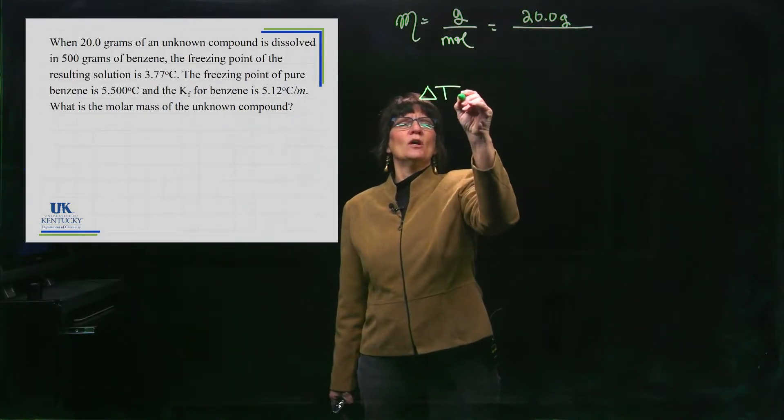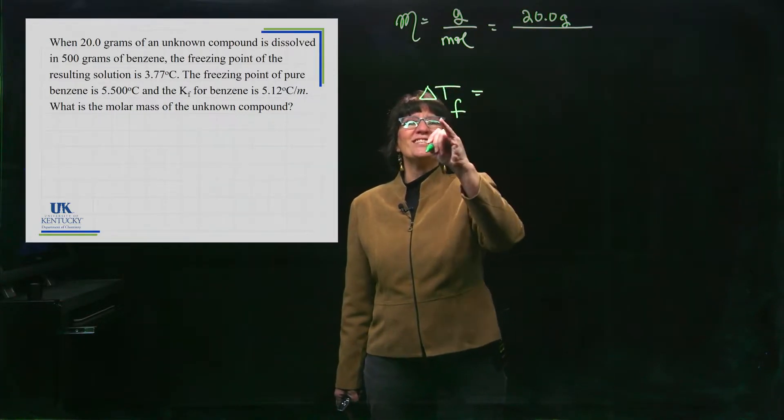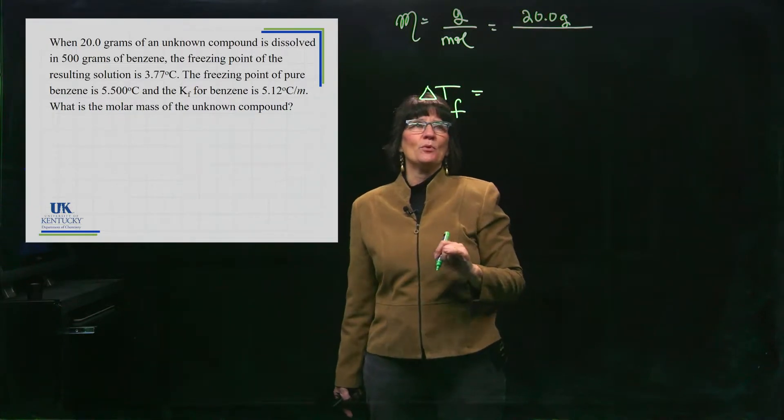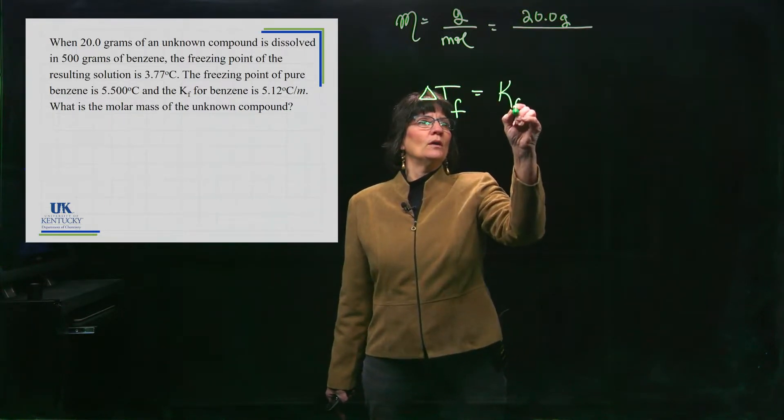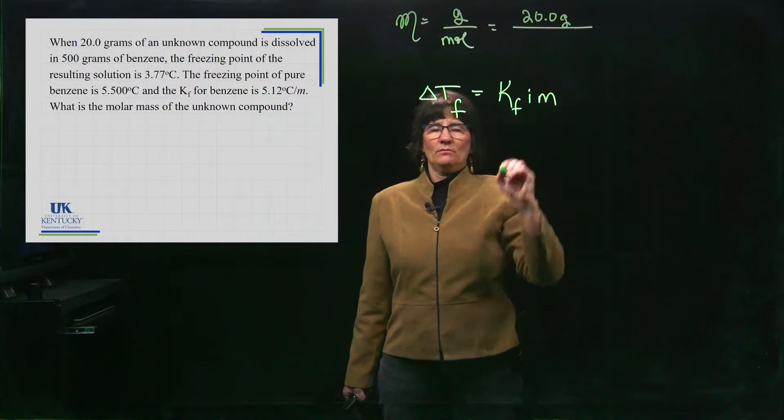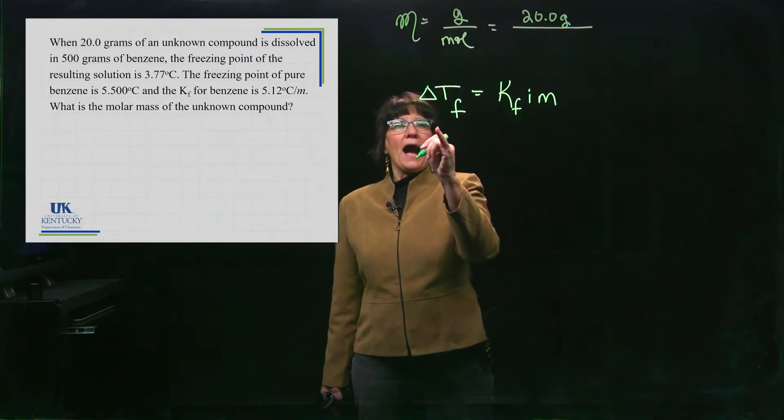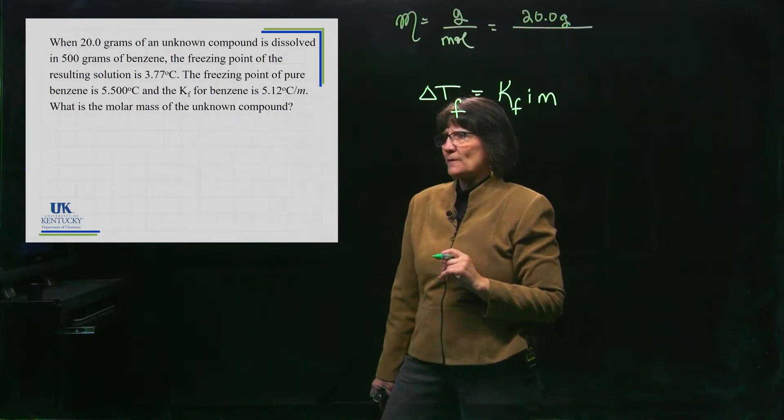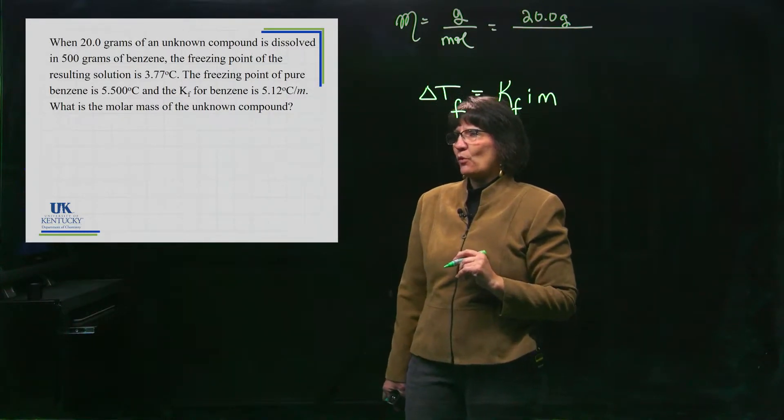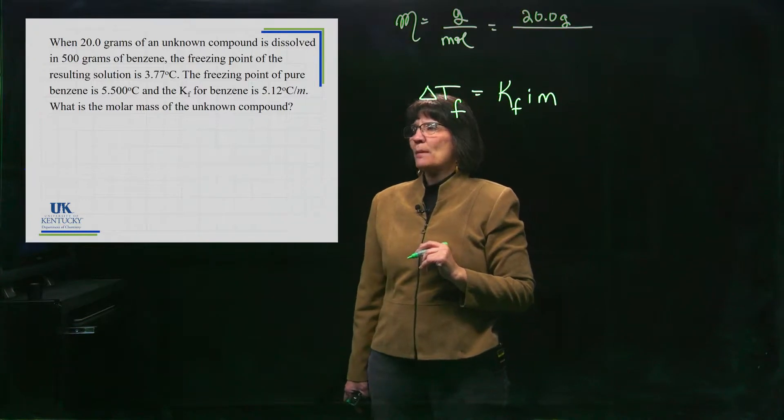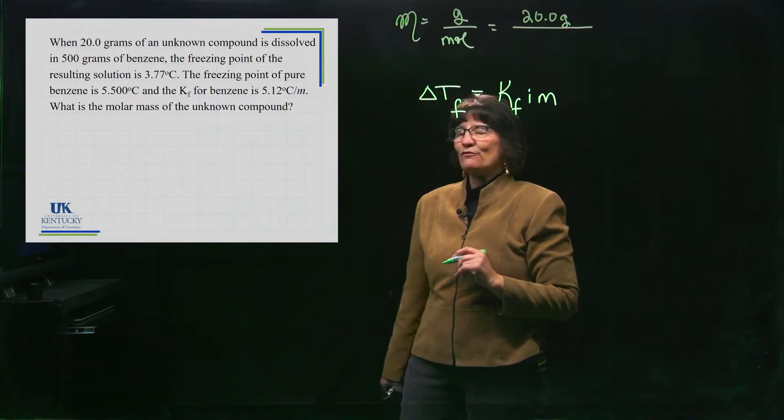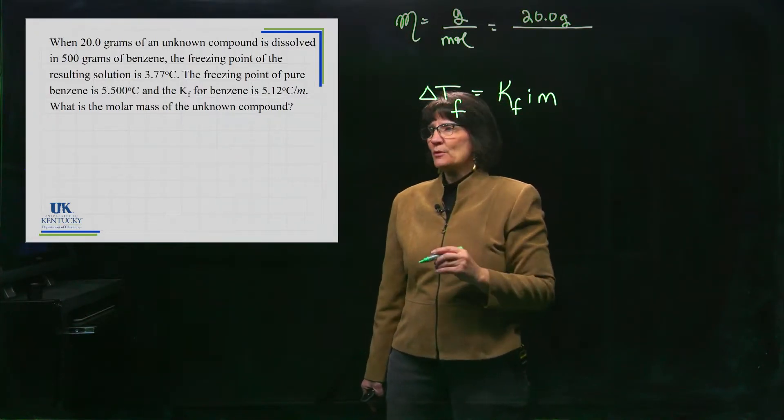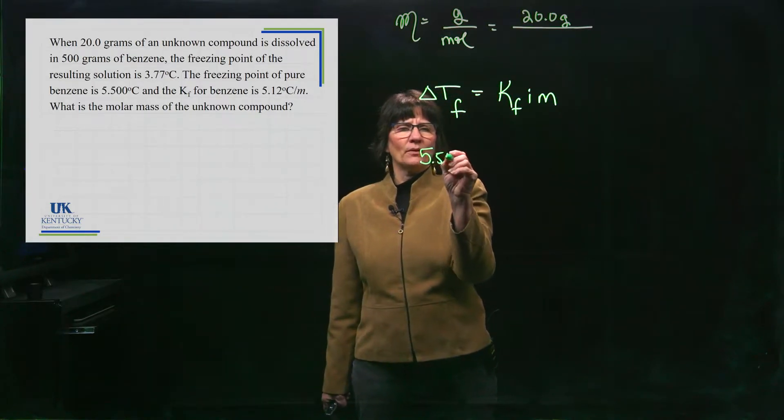The change in temperature of the freezing point, how much is depressed by, because it's freezing point depression, is equal to my equation. I have been given this. Now, how have I been given this? It tells me that the solution has a freezing point of 3.77 degrees, but pure benzene is 5.5. So how is it being depressed? It's always the positive number. It's always goes in as a positive.